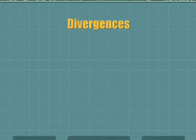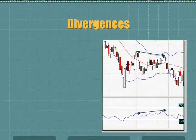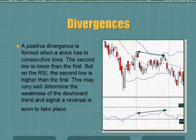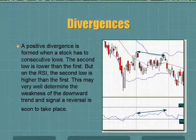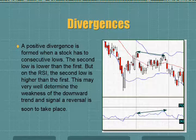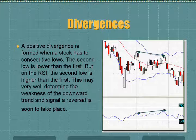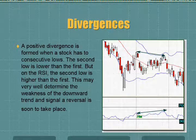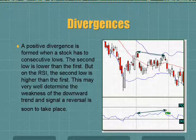Now we're going to talk about divergences, which is the third one. The first positive divergence is formed when the stock has two consecutive lows. The second low is lower than the first. But on the RSI, the second low is higher than the first. This may very well determine the weakness of the downward trend, and the signal or reversal will soon take place in the stock.